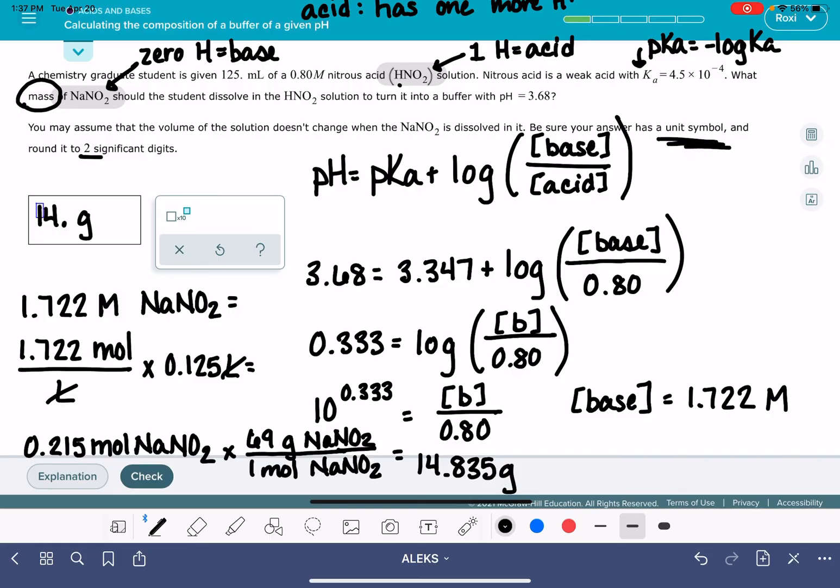If you forget to include the unit symbol, it will just prompt you to type it in. It won't mark it as wrong. I realized I rounded that wrong. It's not 14. It's 15. 15 grams.